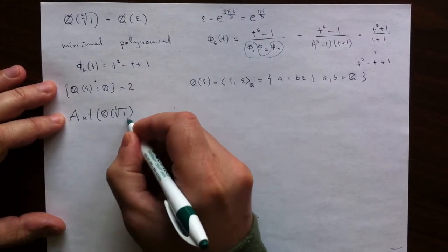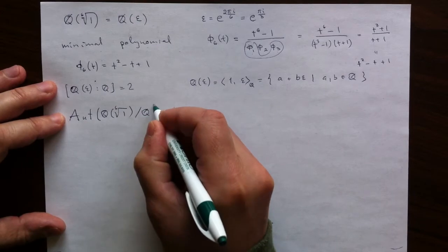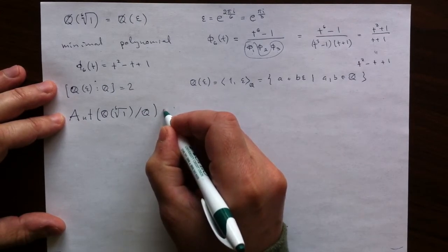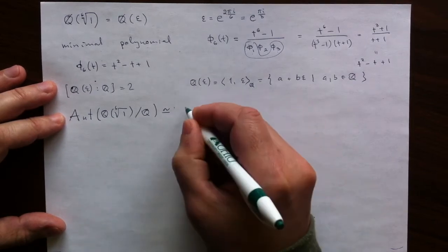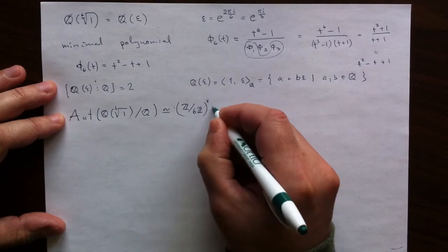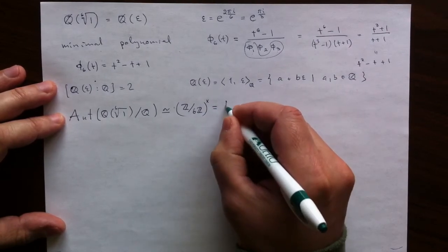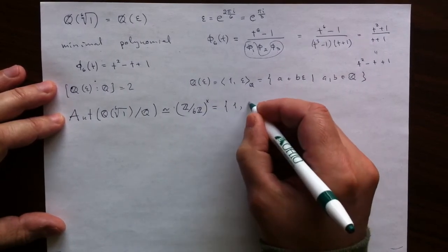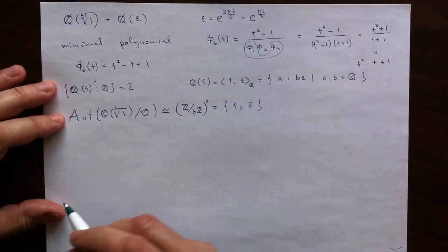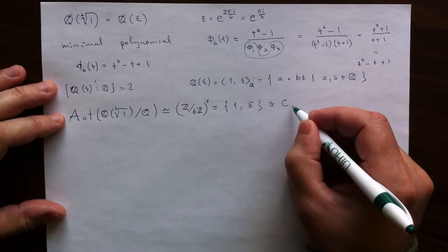That is the symmetry group. We talked about it generically. It is isomorphic, naturally labeled by invertible integers mod 6. And we have 2 such. We have, of course, 1, but then we have the class of 5. I will just write them as integers. So that is as a group.